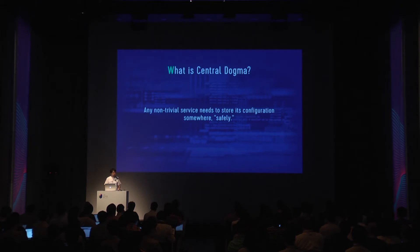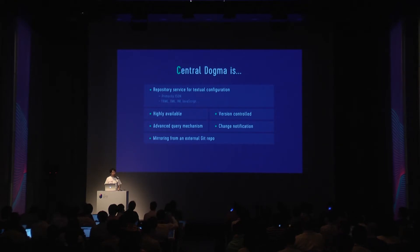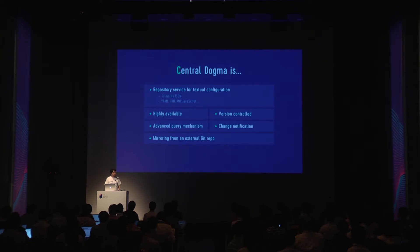So what exactly is Central Dogma? It's basically a repository service for storing textual configuration. It's designed to store JSON files primarily, but it can store any text formats like YAML, XML, INI, and even JavaScript. If an application retrieves its configurations from Central Dogma, it means the application may not function properly when Central Dogma is not available.